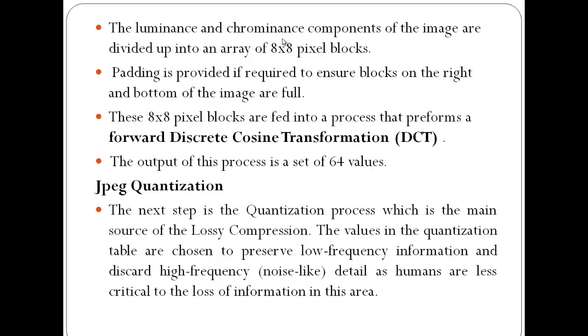The luminance and chrominance components of the image are divided up into arrays of 8x8 pixel blocks. This has been derived from experiment. If we experiment using 4x4 or 16x16 pixel blocks, we see that the maximum compression is achieved from 8x8 pixel blocks.